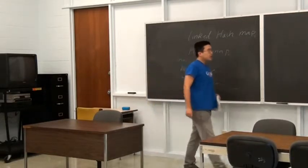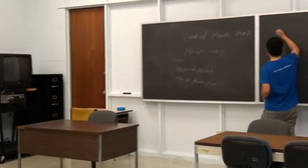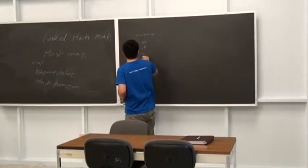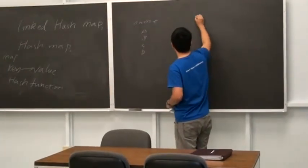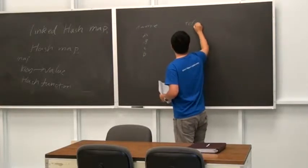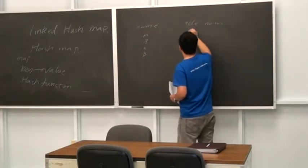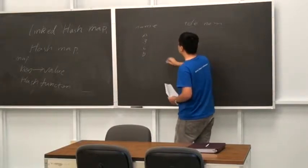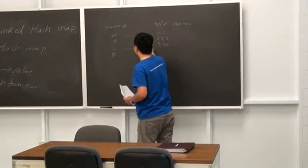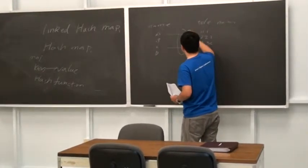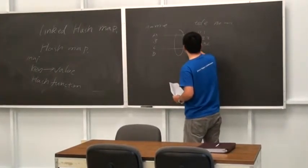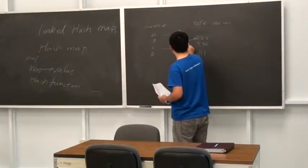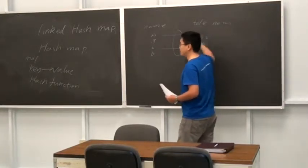With a hash function, we can map the key — for example, names A, B, C, D — to values like telephone numbers. Without a hash function, it used to be in a fixed order. But with a hash function, the mapping is scrambled to different positions — that's a hash function.